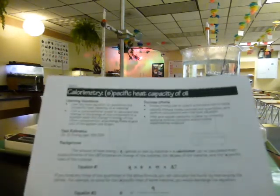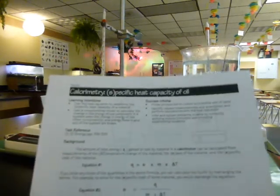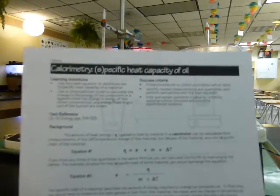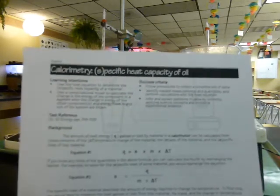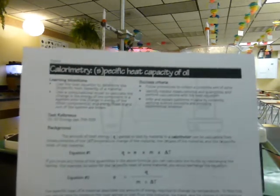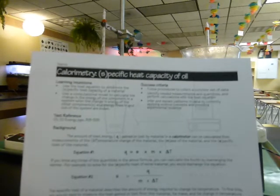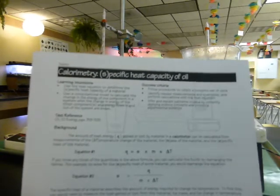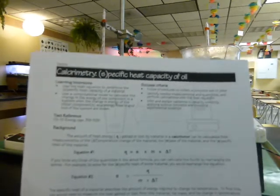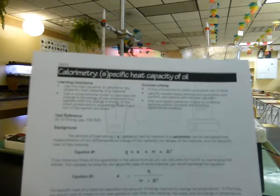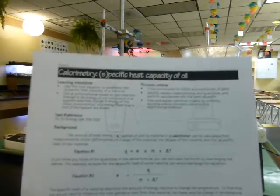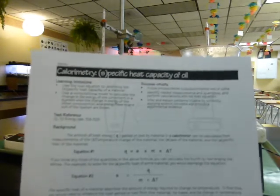Please make sure you have your copy of the assignment: calorimetry, specific heat capacity of oil. In this experiment, we're going to try to find the specific heat capacity — how much energy it takes to change each gram of oil by each degree Celsius — so that we can use oil in our next experiment to find out how hot a Bunsen burner flame is.